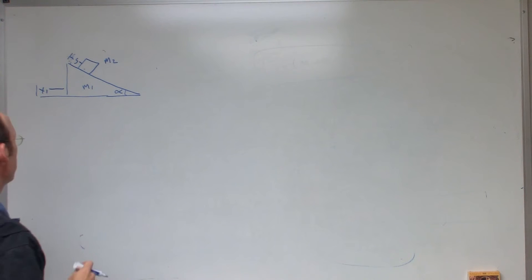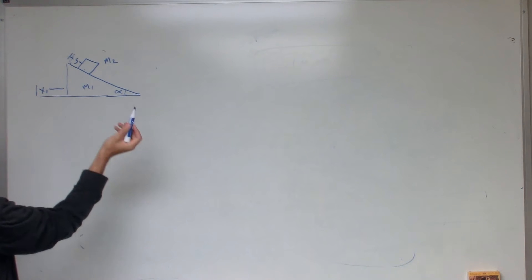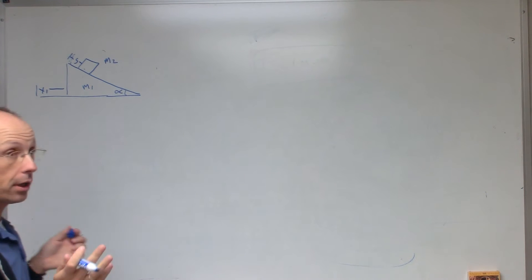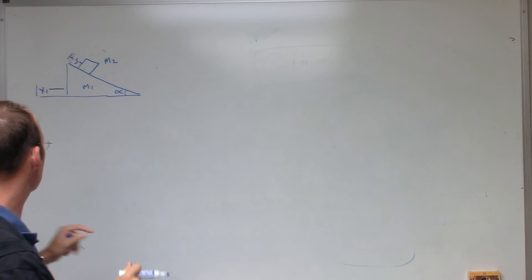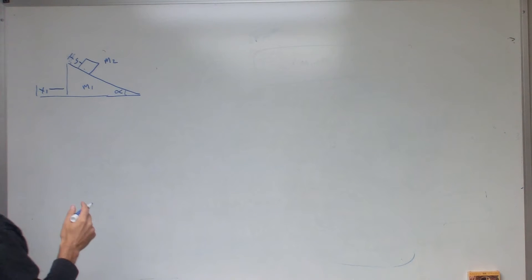So, what we need to do is to write the kinetic energy and write the potential energy, and then we can do the Lagrangian. Of course, we have two variables, so that means that we need to have two Lagrangian equations. Let's just start off with the kinetic energy.